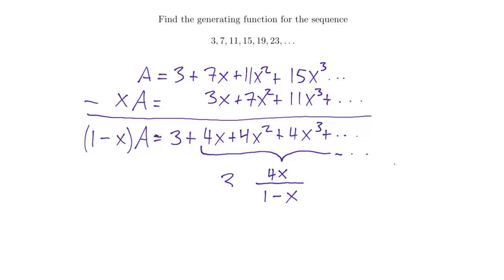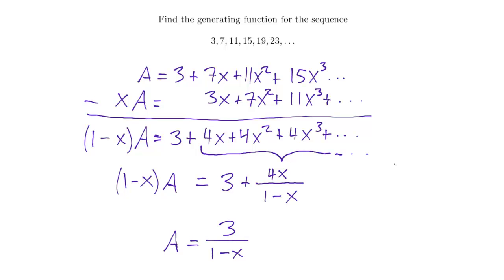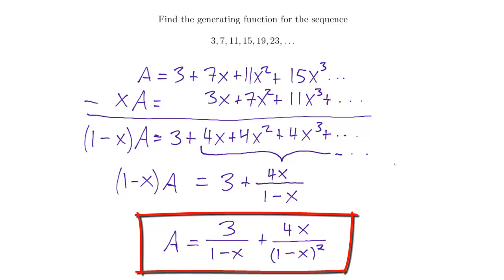I also have 3 added to that, and the whole right-hand side equals (1 minus x) times A. Solving for A: A equals 3 over (1 minus x) plus 4x over (1 minus x) times 1 over (1 minus x), which is 4x over (1 minus x) squared. That is the generating function for this sequence.